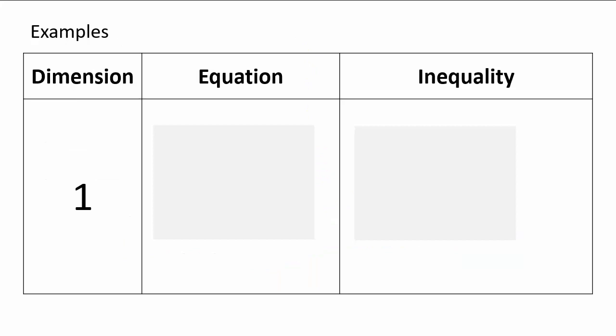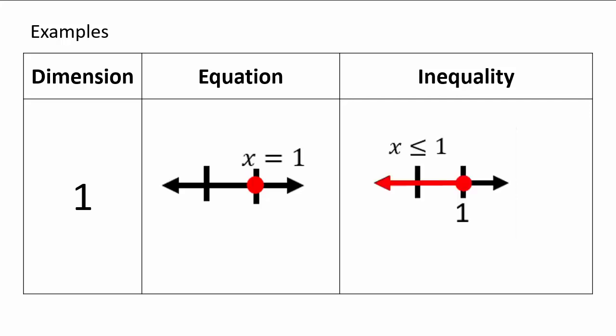Let's talk about one-dimensional equations. They're usually in the form of variables, and you solve them to get a variable equal to some number, so they represent points on the number line. You can have inequalities like x less than or equal to 1, which represents all points to the left of 1 on the number line. So this is one-dimensional equations and inequalities.